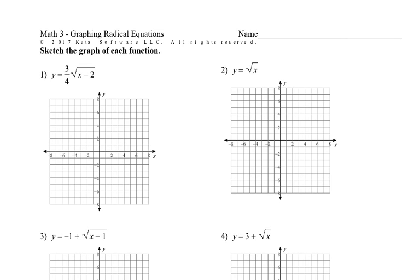Math 3, graphing radical equations. We'll start with number 2 because that's the parent graph and everything's built off that. This is one where it's really easy to just graph using electronic means, so I would suggest that too. But on the homework, we're only doing 1 through 6, the first page. So square root of x starts at (0,0), and (1,1), (4,2),